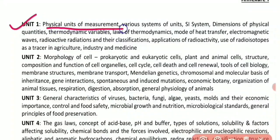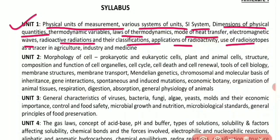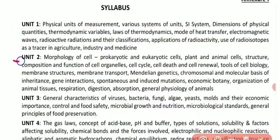Unit 1 covers units of measurement, various systems of units, dimensional analysis, physical quantities, thermodynamic variables, laws of thermodynamics, modes of heat transfer, electromagnetic waves, radioactive radiation and their classification, applications of radioactivity, and use of radioisotopes as tracers in agriculture, industry, and medicine.